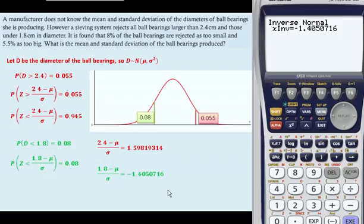Now we've got these two. We've actually got two simultaneous equations in mu and sigma that we can solve. So my recommendation would be, first of all, to multiply by sigma and then solve that from there.